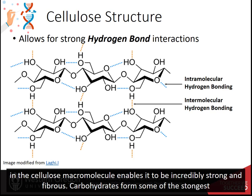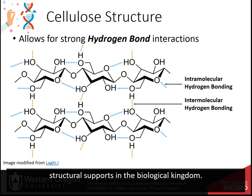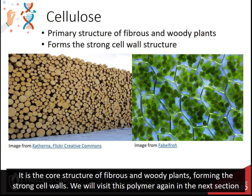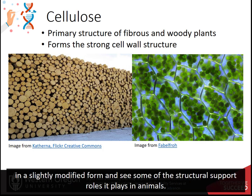Carbohydrates form some of the strongest structural supports in the biological kingdom. Cellulose is the core structure of fibrous woody plants, forming strong cell walls. We will revisit this polymer in the next section in a slightly modified form to explore structural support roles it plays in plants and animals.